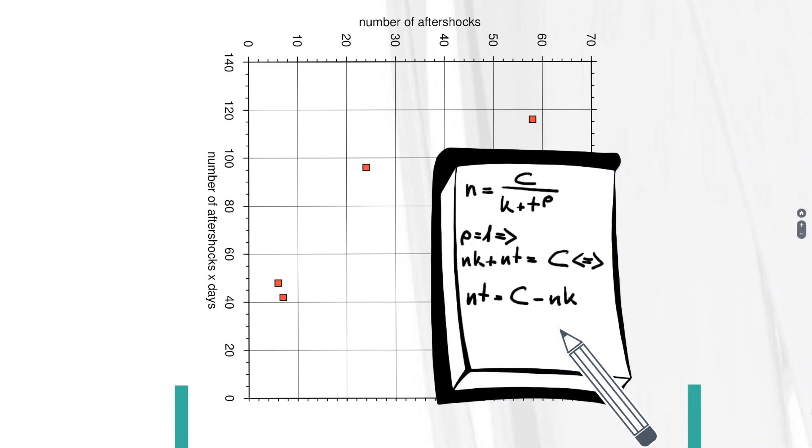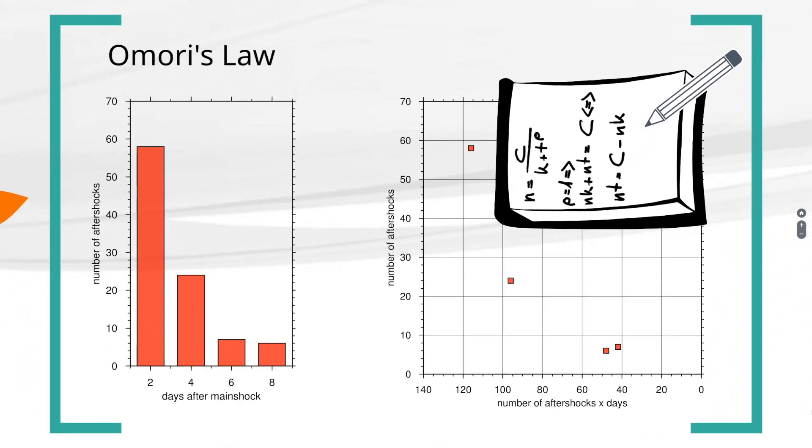This now corresponds exactly to our diagram. Number of aftershocks n times t on the y-axis and n on the x-axis. If we now fit the distribution of points to a line, the gradient of the line equals minus k and the intercept equals c. k is therefore approximately minus 1.4 and c equals 40. If we substitute that into Omori's Law, we can now more or less adapt the original data of the previous diagram.